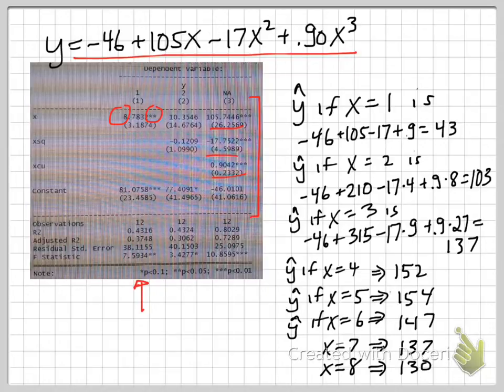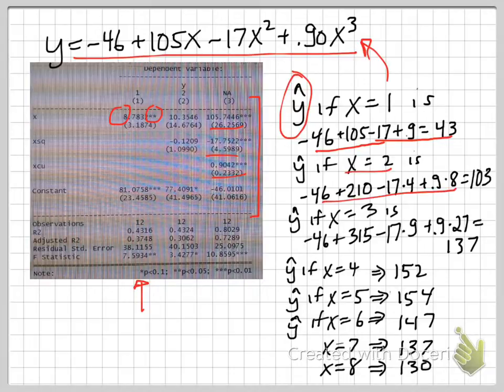And we can use that regression then to calculate the predicted values. What's our predicted value for y for the different levels of x? So if x is equal to 1, we plug 1 into this equation, and we get minus 46 plus 105 minus 17 plus 0.9 roughly equals 43. So I'm rounding here. If x is equal to 2, we plug that in and we get 103.